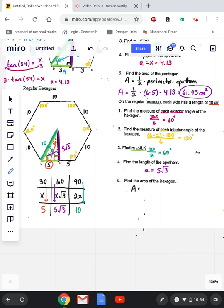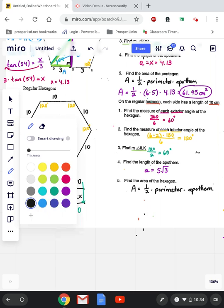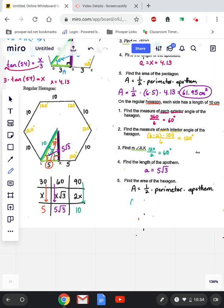If I want to know the area of the entire hexagon, area equals 1 half times the perimeter times the apothem. So the 1 half part we can leave alone. It's just a number. To find the perimeter, I can do number of sides times the length of the side. There are 6 sides. And each side is 10, so 6 times 10, times our apothem, which is 5 square root of 3.